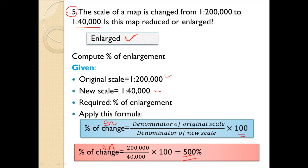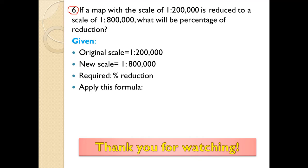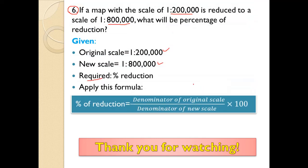Question number six — last but not least: If a map with a scale of 1:200,000 is reduced to a map with a scale of 1:800,000, what will be the percentage of reduction? The original scale is 1:200,000 and the new scale is 1:800,000. To calculate the percentage of reduction, apply this formula: percent of reduction equals denominator of original scale divided by denominator of new scale.